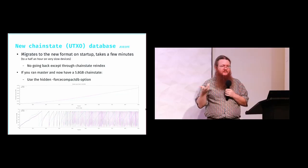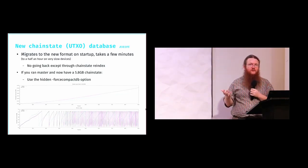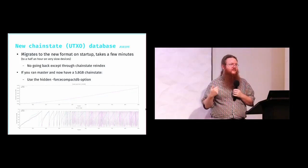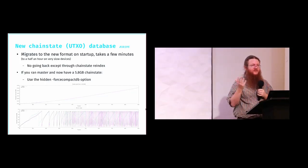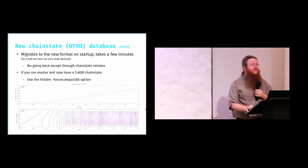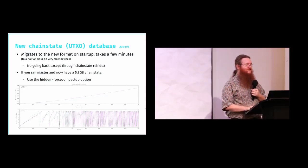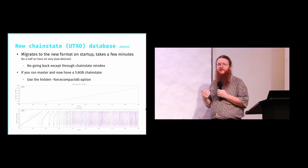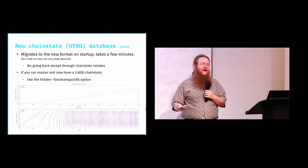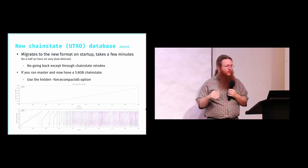This is a database format change, so there's a migration process. When you start 0.15 on an older host, it will migrate to the new format. On a fast system this takes a couple of minutes — two or three minutes. If you try this on a Raspberry Pi or something with slow I/O, you might want to wait a couple of hours. And you can't go back — once you've run 0.15 on a node, to go back to an older version you have to do a chain state re-index, which will take hours.